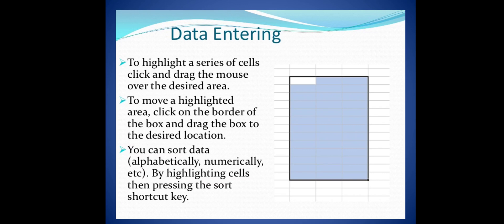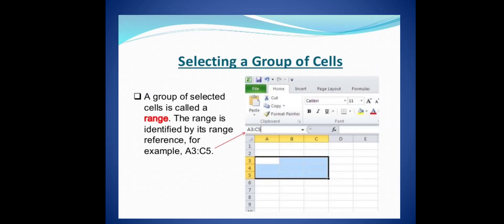Ctrl V press then paste, this command we can do. A group of selected cells is called a range. The range is identified by the range reference, for example A3 to A5. A group of cells can be selected and various commands applied.